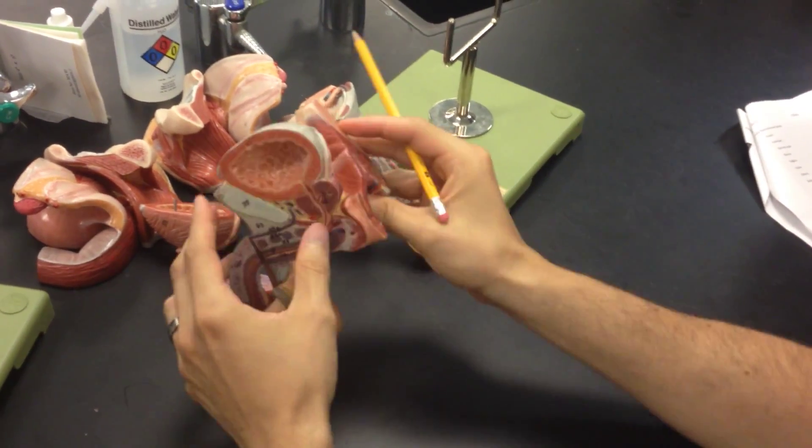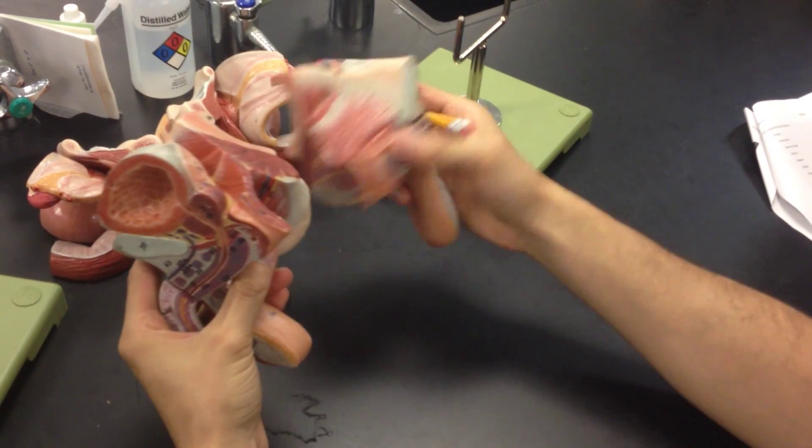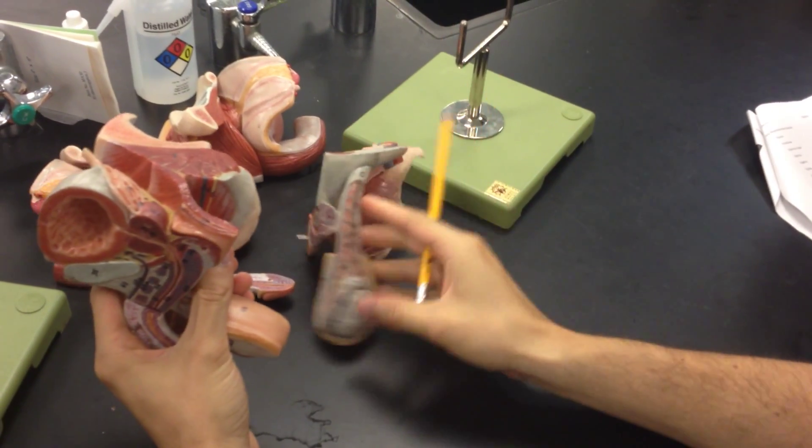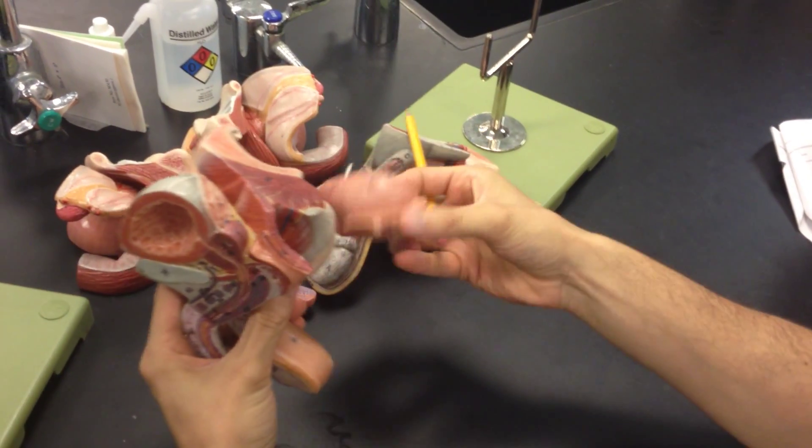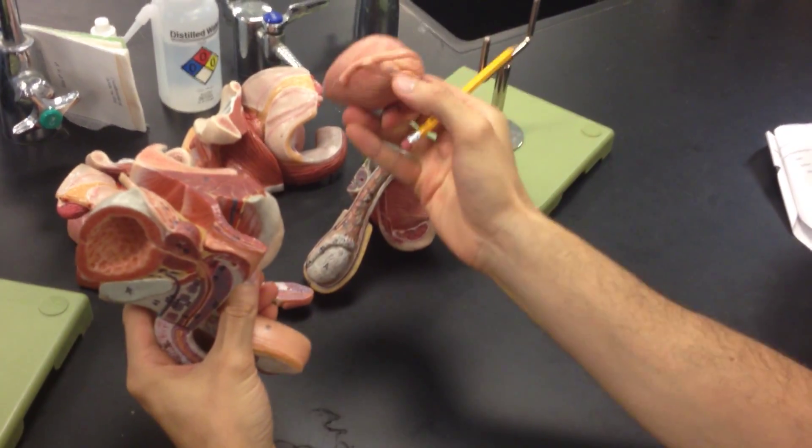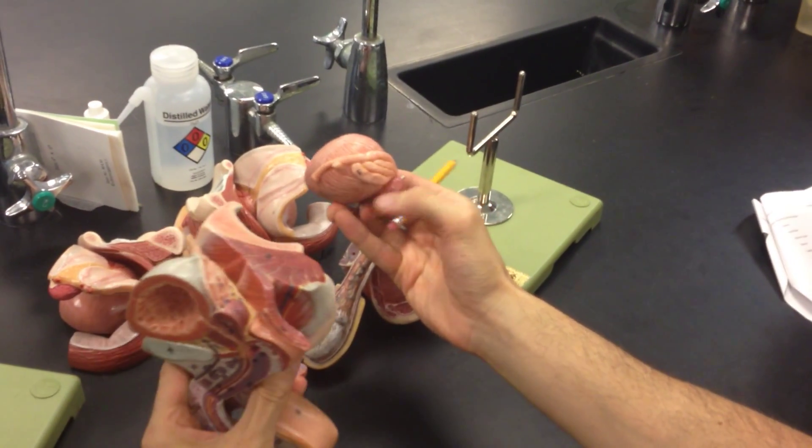So seminal vesicles. This one is dissected through and the other one, that's what it would normally look like. All right, so now...